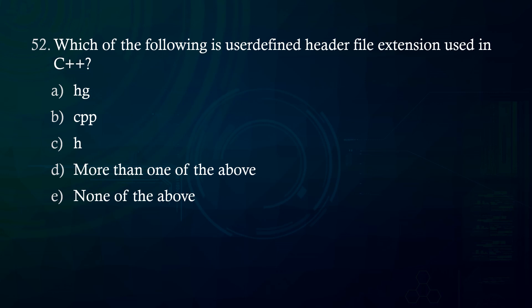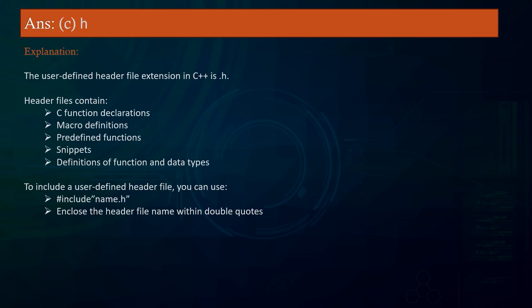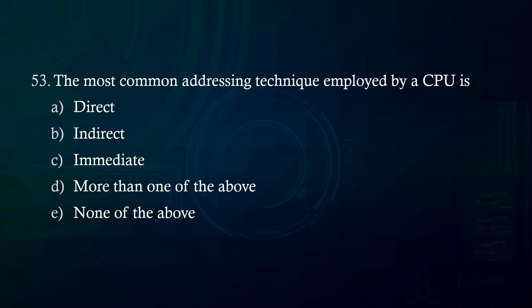Which of the following is the user-defined header file extension used in C? A. .hg B. .cpp C. .h D. More than one of the above E. None of the above. Answer: .h. Explanation: The user-defined header file extension in C is .h. Header files contain C function declarations, macro definitions, predefined functions, snippets, definitions of functions, and data types. To include a user-defined header file, you can use #include "name.h", enclosing the header file name within double quotes.